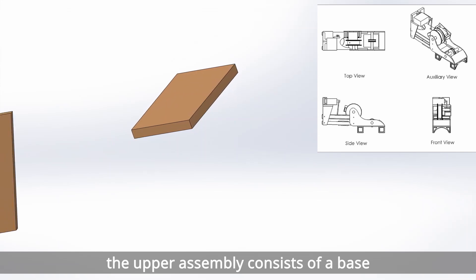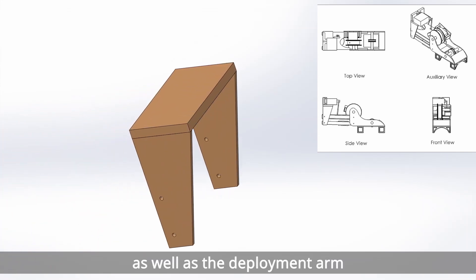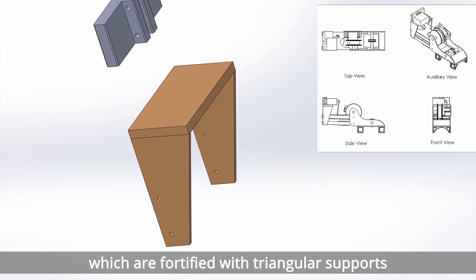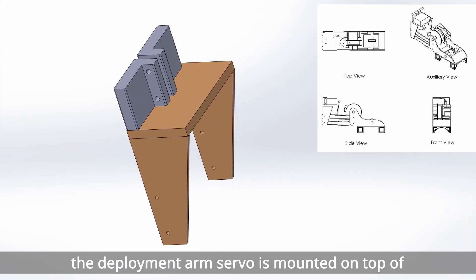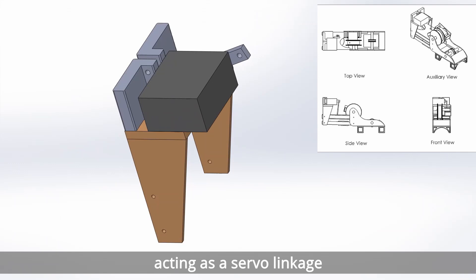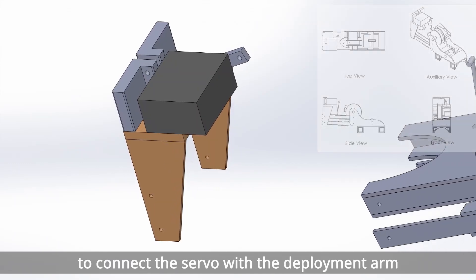The upper assembly consists of a base for which the deployment arm servo is mounted on, as well as the deployment arms, which are fortified with triangular supports. The deployment arm servo is mounted on top of the base with a 4mm piano wire acting as a servo linkage to connect the servo with the deployment arms.